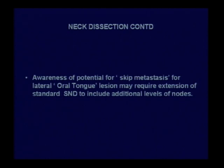Awareness of skip metastasis — which is not uncommon for lesions on the lateral aspect of the oral part of the tongue — is essential. If skip metastasis is present, it may require extension of the standard selective neck node dissection to include additional levels. For oral tongue lesions, for example, if level 3 is also involved, that level must be removed in addition to the standard supra-omohyoid dissection.